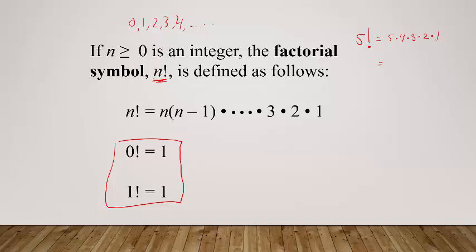Five factorial would be five times four times three times two times one. Five times four is twenty, times three is sixty, times two would be one hundred and twenty.